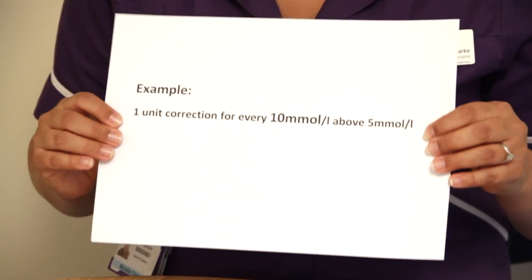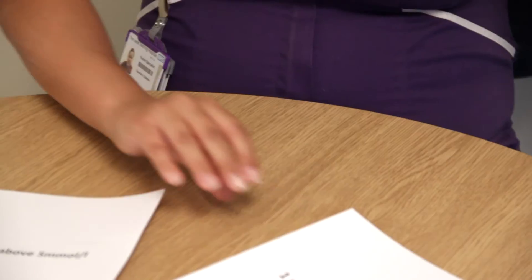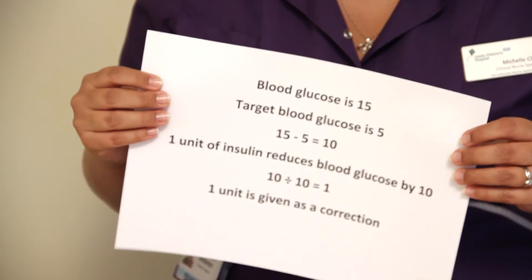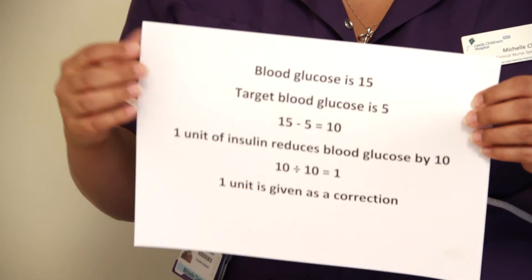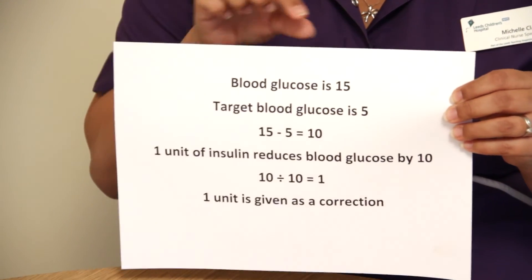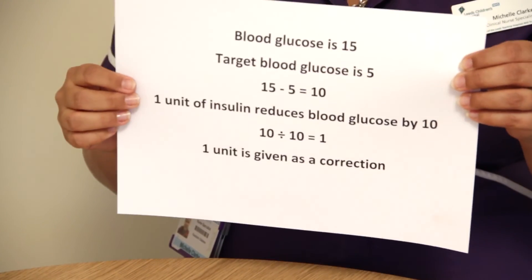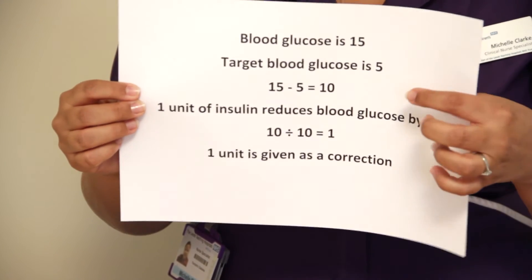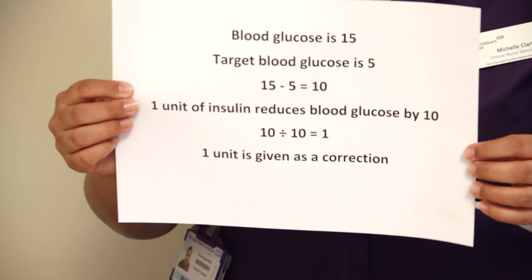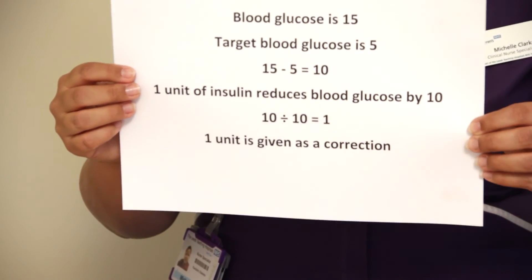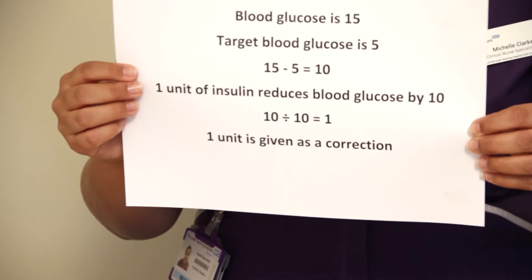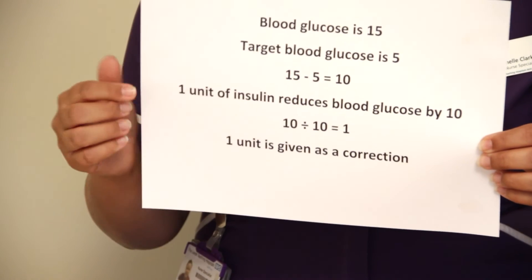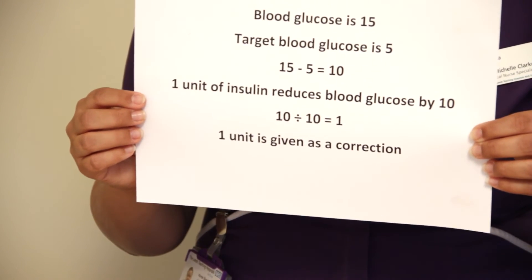The way to work it out is to test your blood glucose. For this example, the blood glucose is 15. Everyone's target blood glucose is 5, and you want to get your blood glucose to 5, so you take 5 from 15, which equals 10.